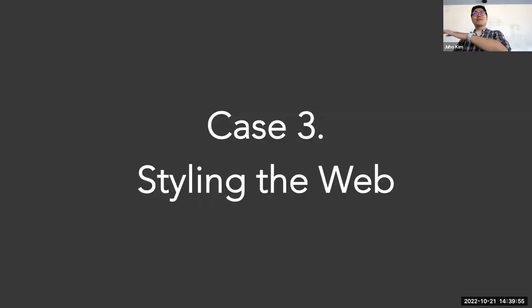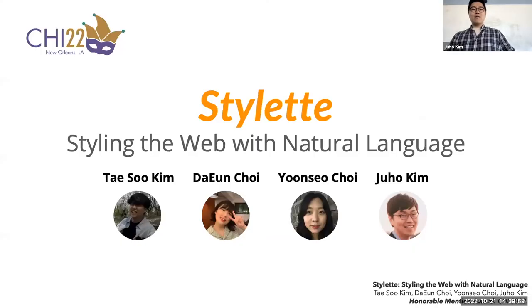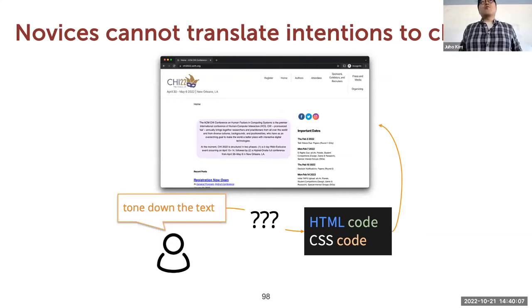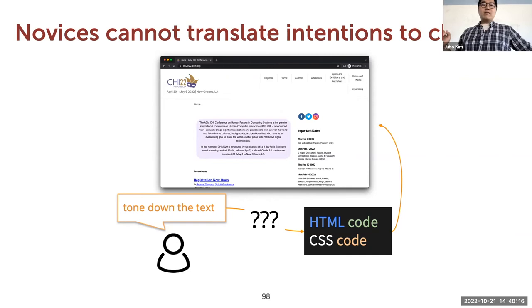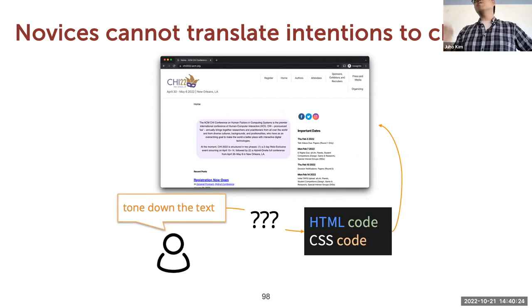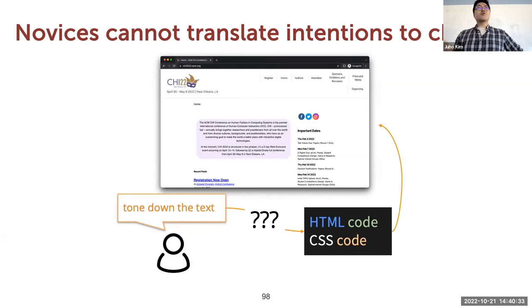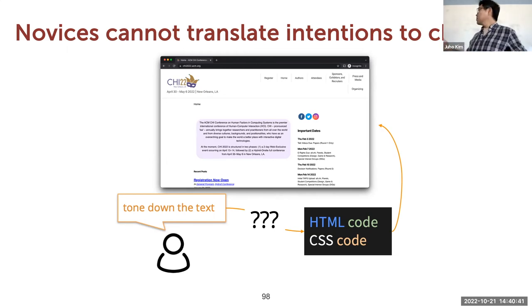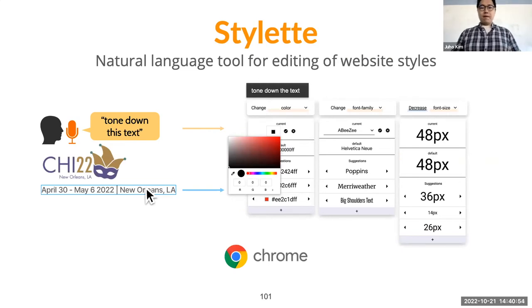Now to the final example — a completely different domain: styling the web. This was a CHI 2022 paper. We wanted to see if people can use natural language to make design changes on a website. As a novice user, you might want to change a color that's hard on your eyes or make the menu bar bigger, but it's hard without CSS knowledge. So we thought: what if you could say something like 'tone down the text' and the system automatically infers the intent and suggests design changes?